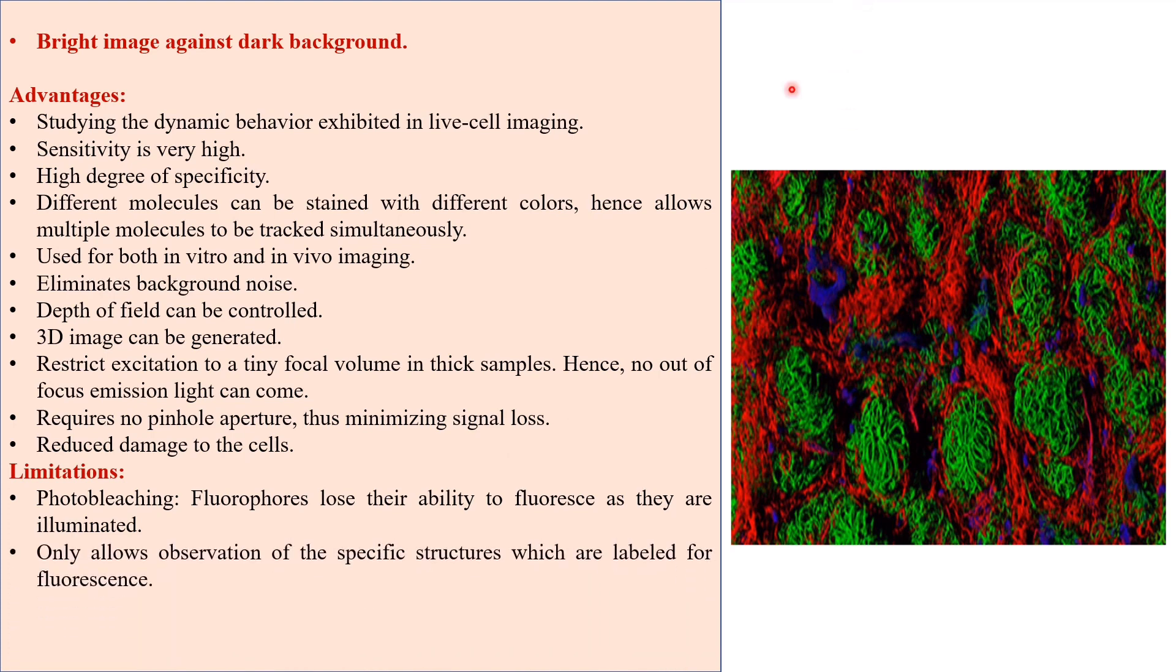One more disadvantage is that two photon microscopy only allows observation of the specific structures which are labeled for fluorescence. It has less resolution. The resolution of a microscope system is inversely proportional to the wavelength of light used.